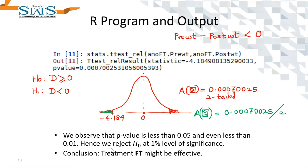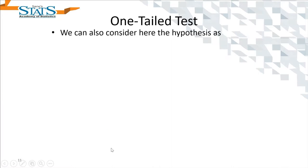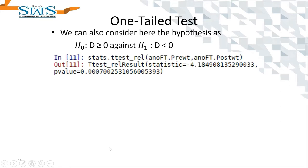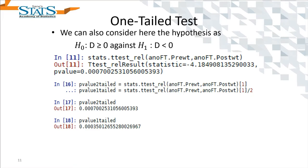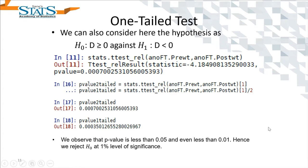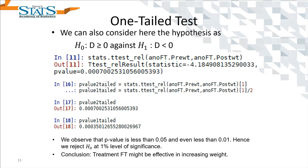Summing up: we had H0 and H1 set up accordingly, generated the test statistic and the p-value, and calculated the one-tailed p-value by dividing by 2, giving us 0.0003. Note that ttest_rel in Python calculates the two-tailed p-value only, unlike the t.test function in R.